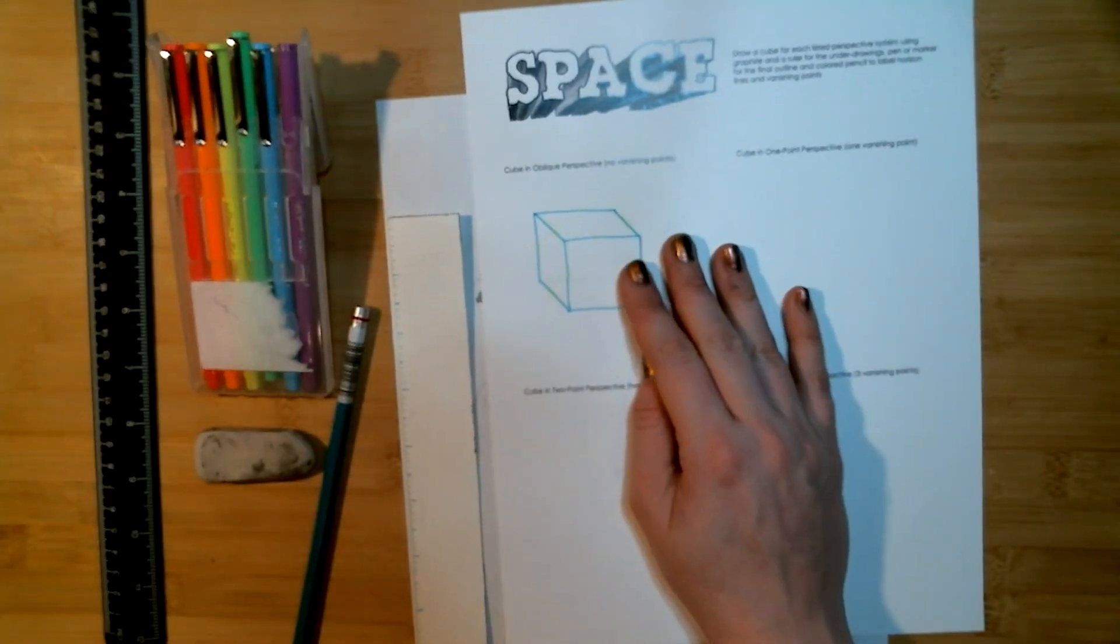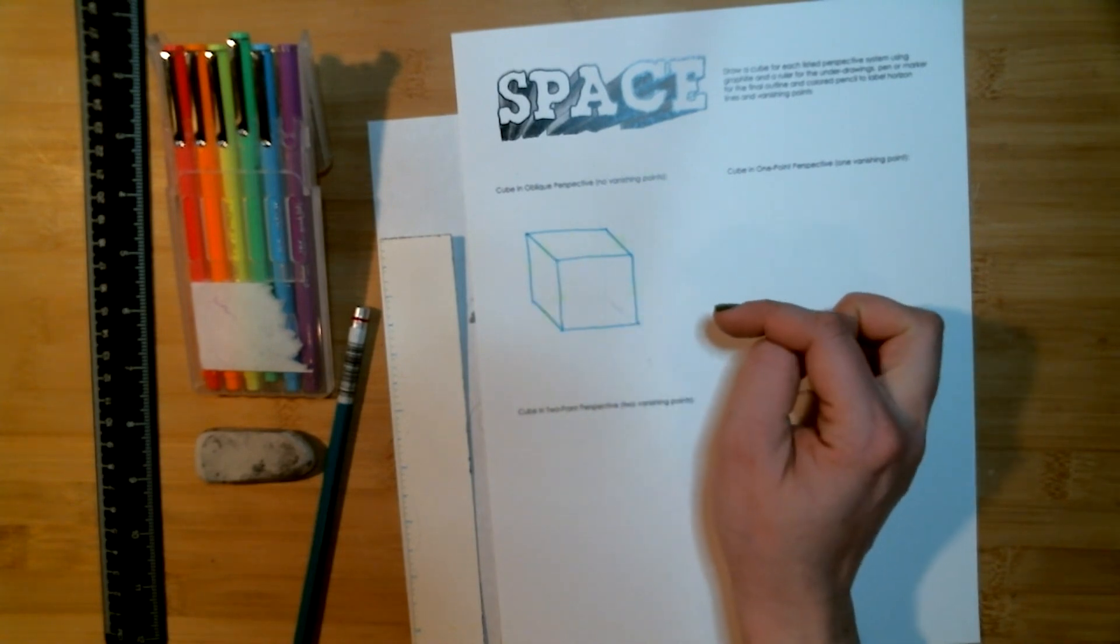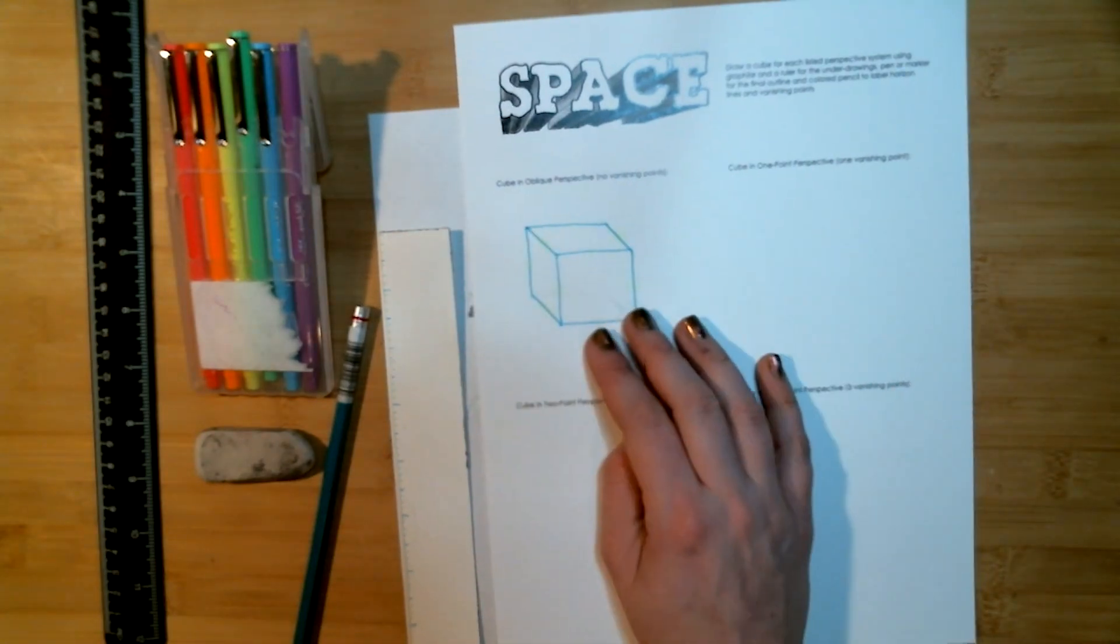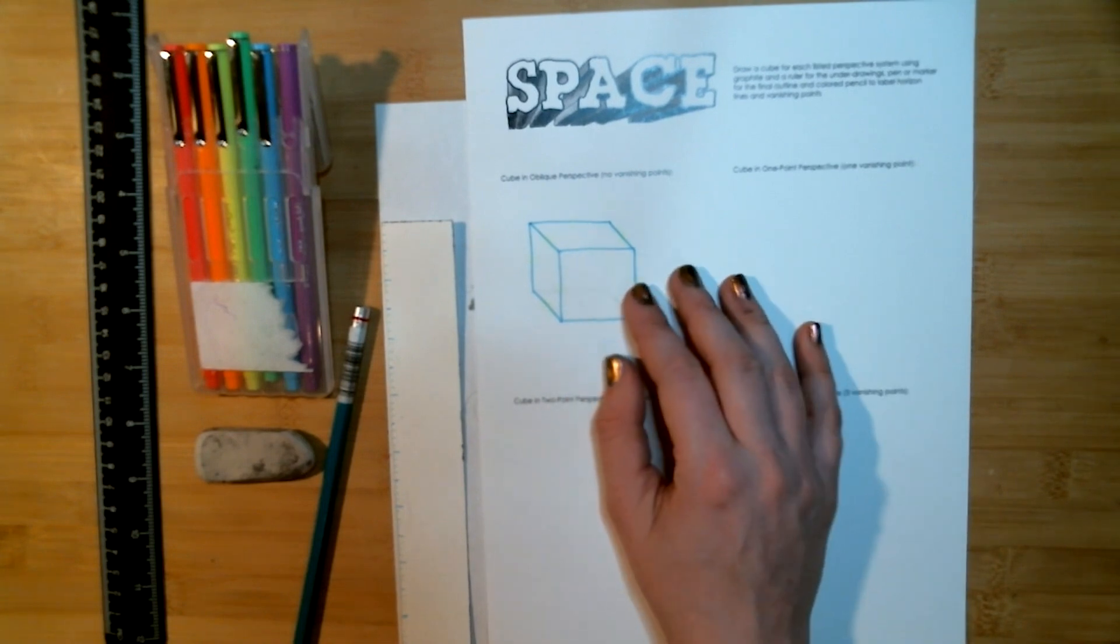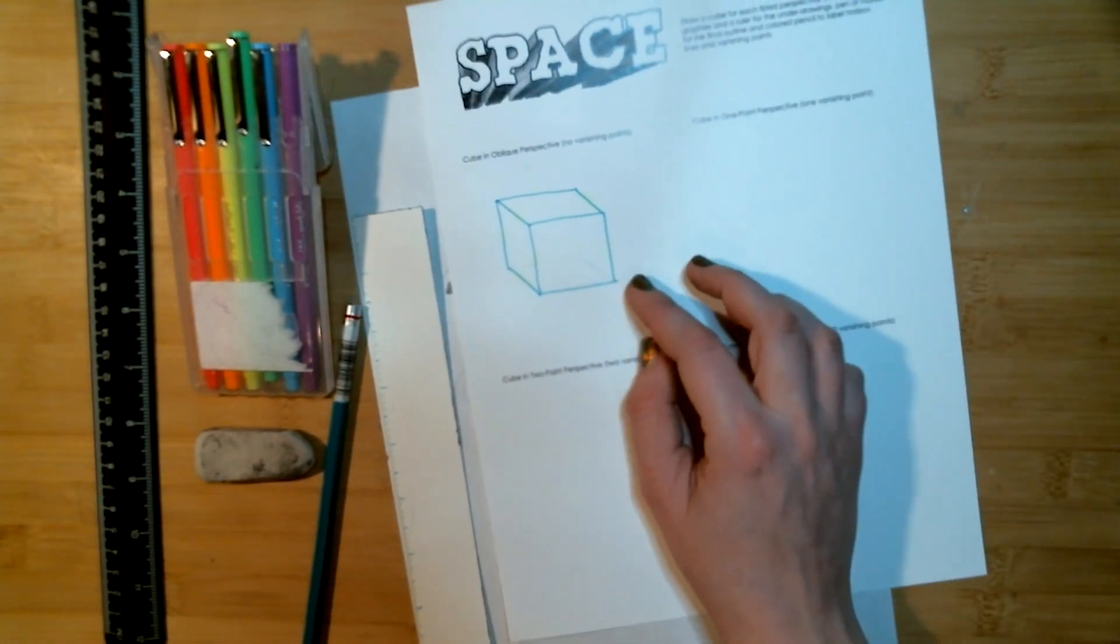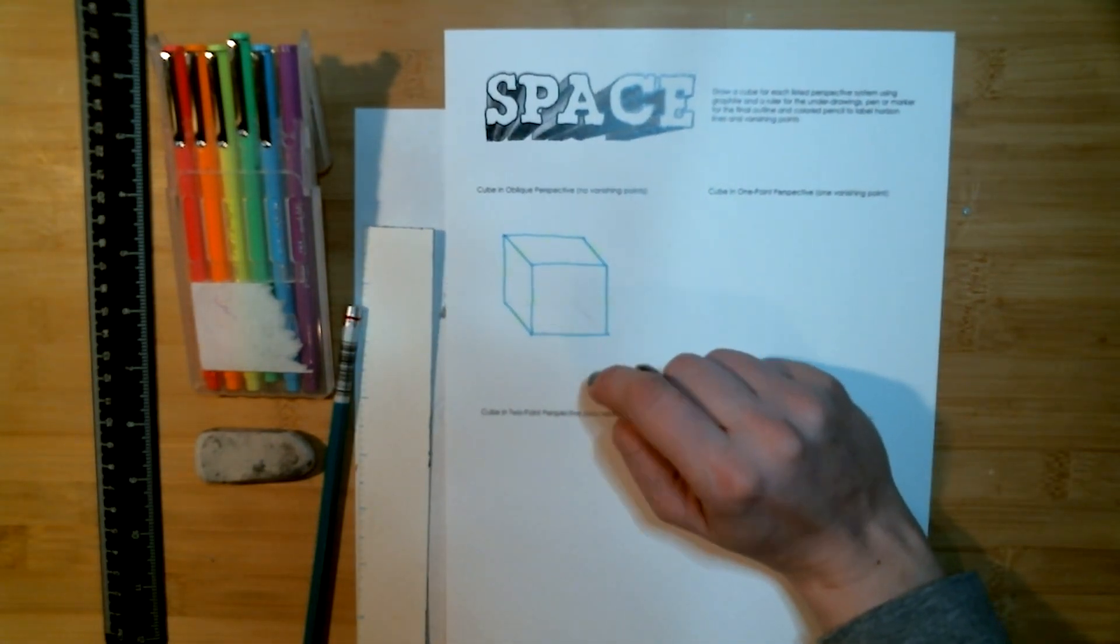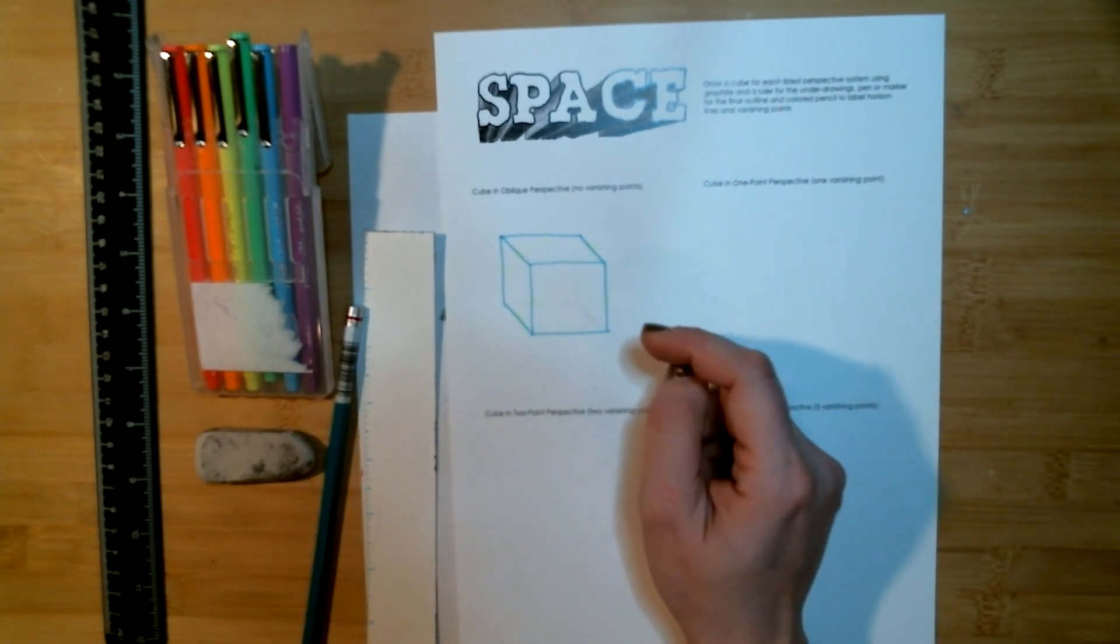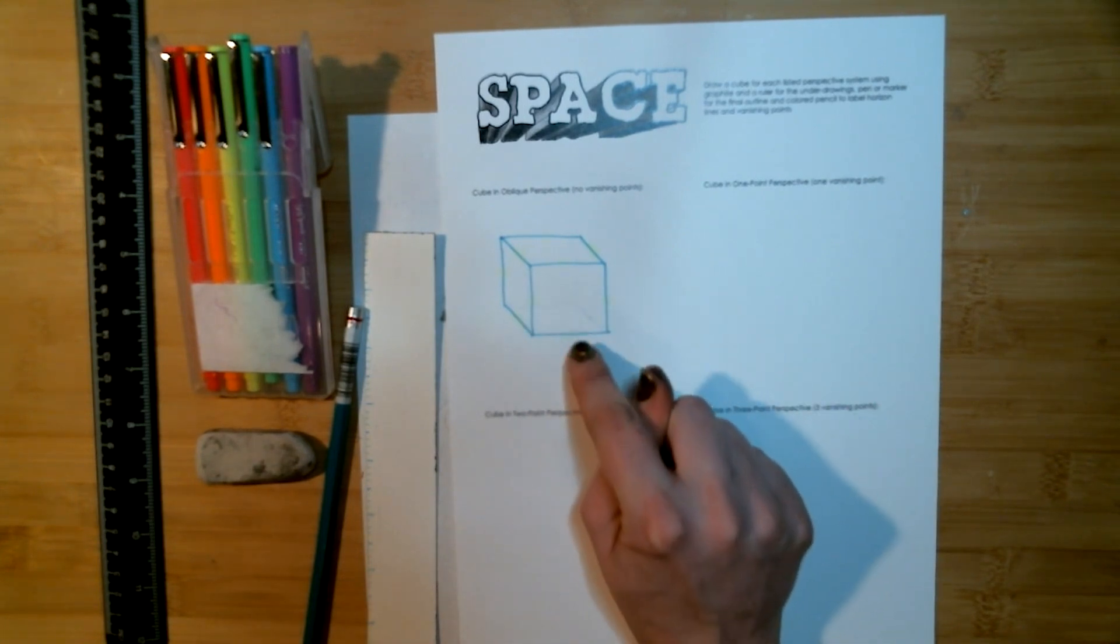So what I have right here is a box drawn in oblique perspective meaning that there are these sets of parallel lines in every dimension but it is an approximation of 3D space. It's not the most faithful rendering of 3D space on a 2D surface and I have left my pencil under drawings there just to give reference to how I constructed the piece. And I did decide to label the parallel lines in a very faint yellow and then the outline of the box in blue.